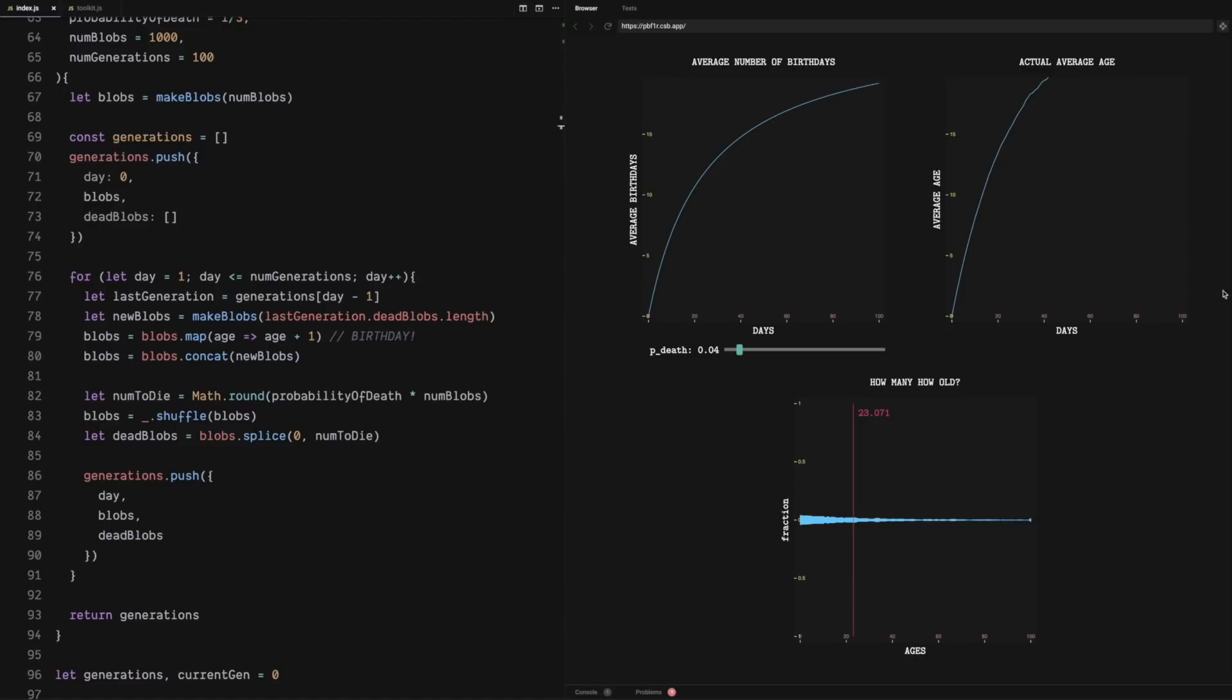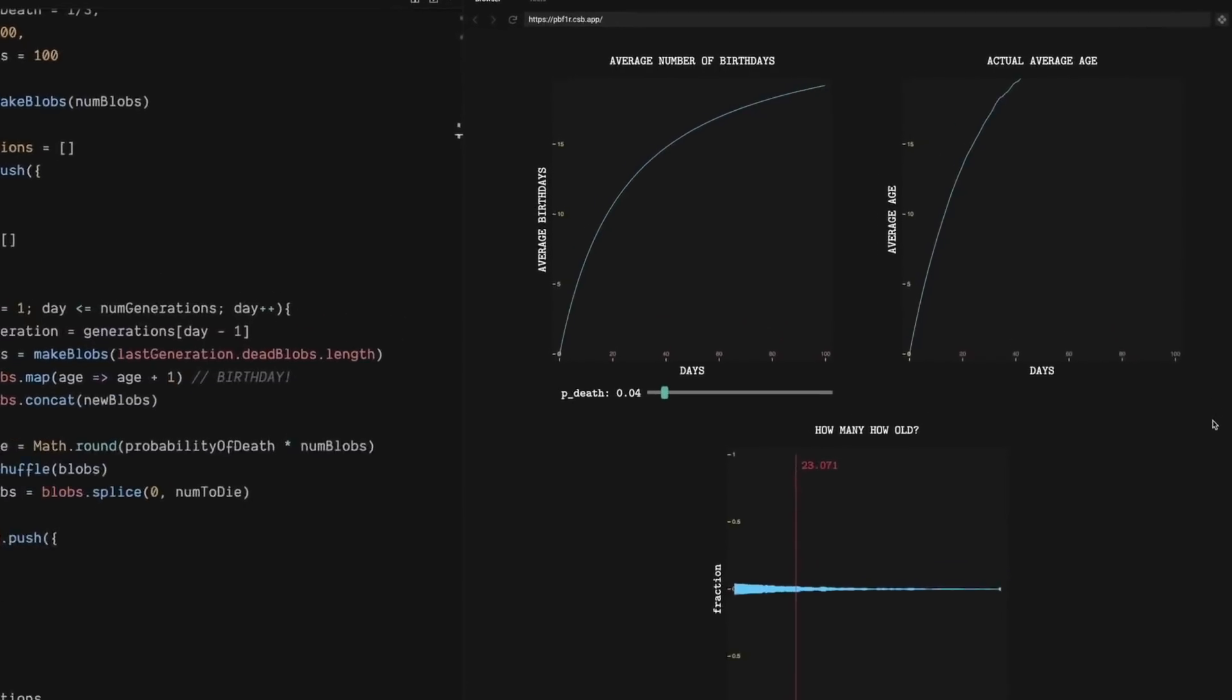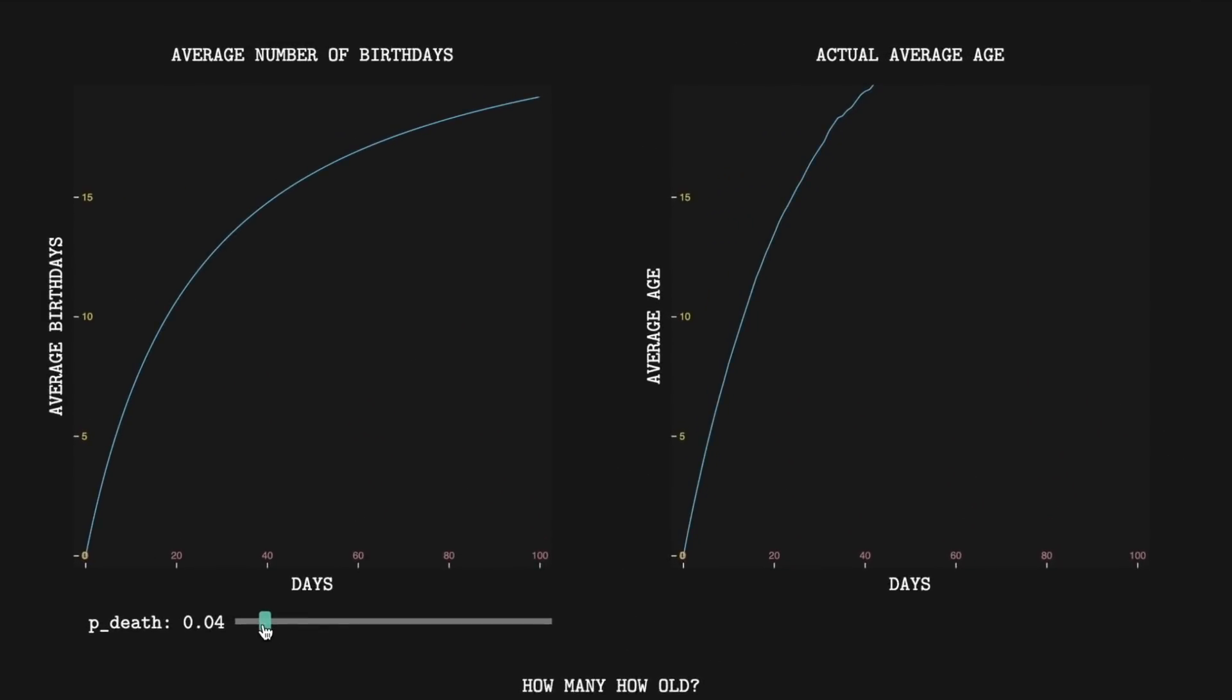The downside of doing an experiment is that it can reveal flaws in your theory. And comparing the average age curves, you can see that they don't exactly match. Sometimes they're actually quite a bit off. So why is this wrong? Well, what we're actually calculating isn't the average age. It's the life expectancy.